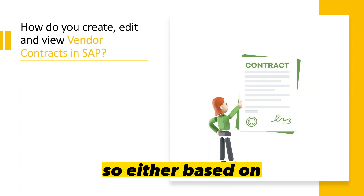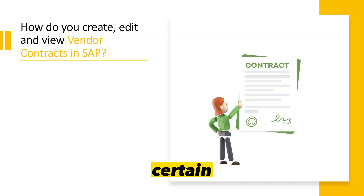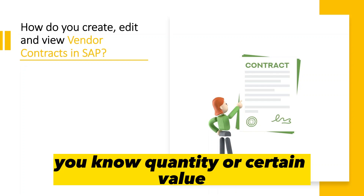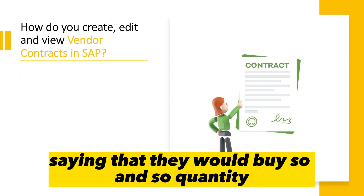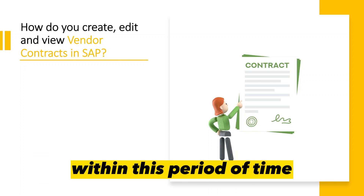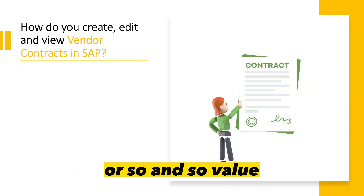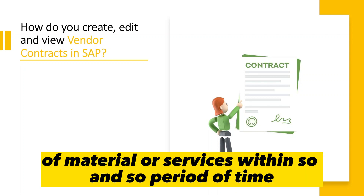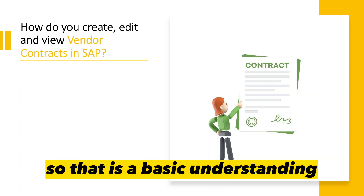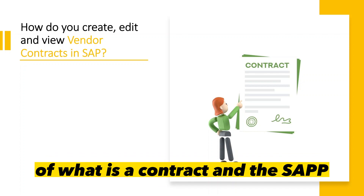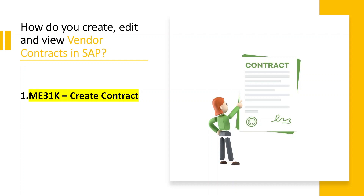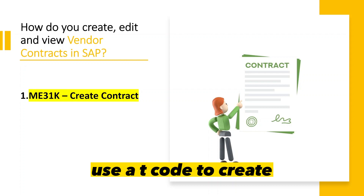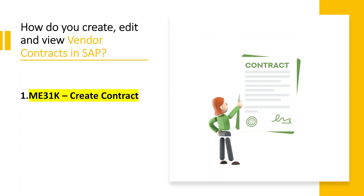Either based on a certain quantity or certain value, the ordering party will agree with the vendor saying that they would buy a certain quantity within a period of time, or a certain value of material or services within a period of time. That is a basic understanding of what a contract is in SAP. We can use a T-code to create a contract.